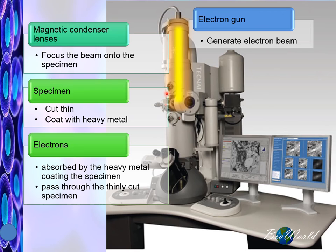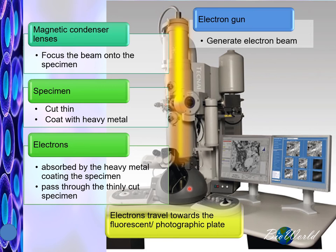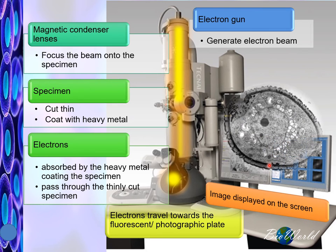So the electrons that exit the specimen will be fewer than the electrons that were originally released. These electrons then travel down to the fluorescent plate located at the bottom. Whatever is recorded by the fluorescent plate will be displayed here on the screen.